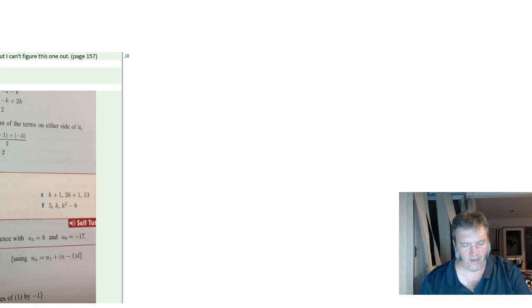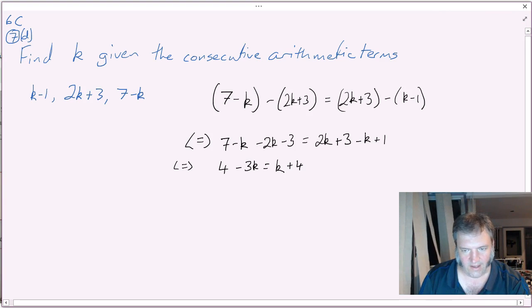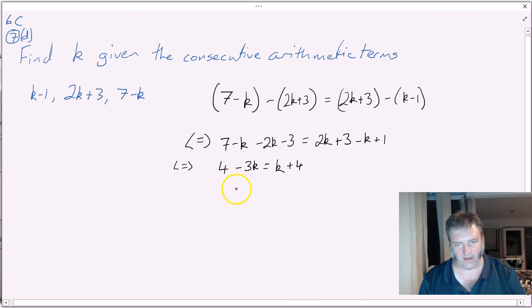Almost home. Let's get our terms together. I want to get all my k's on the right, because negative 3 is less than positive 1. I'm going to get rid of the negative 3. So let's add 3k to each side there.